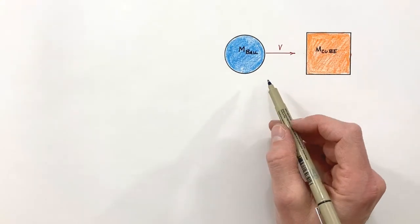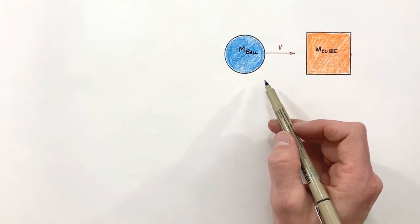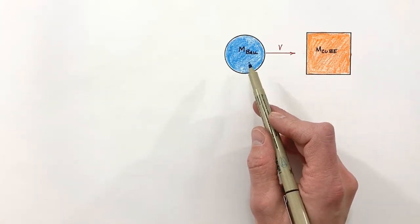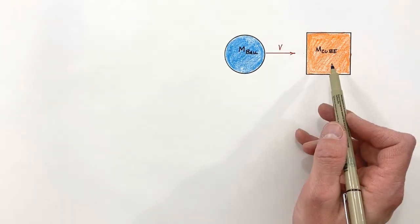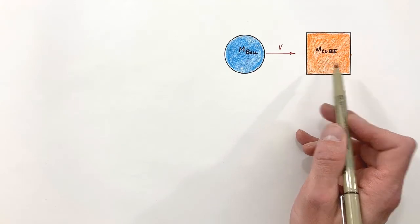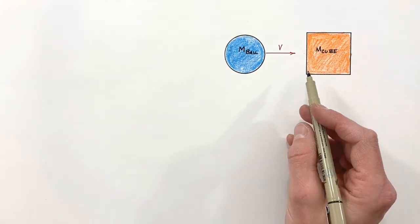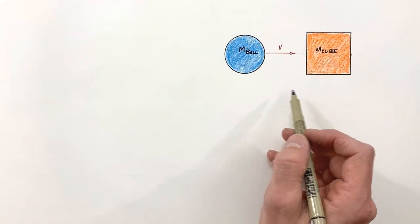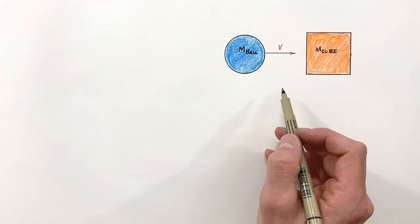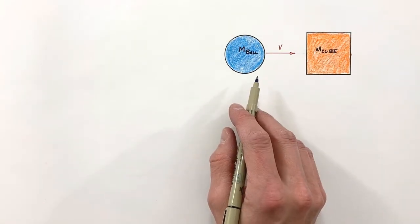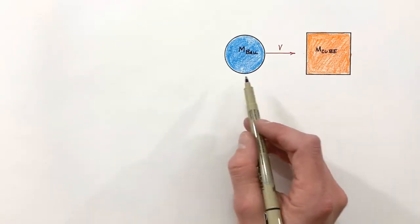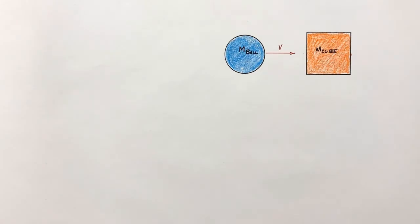Alright, today what I want to do is take a look at collisions and get an understanding for exactly what's happening when two things collide. We're going to take a look at just a ball running into a cube, but this could be any two things that collide with one another. There are lots of different types of collisions that occur and we'll get into those later, but today I want to talk about collisions in general and things that are true for all collisions anytime two things run into each other.